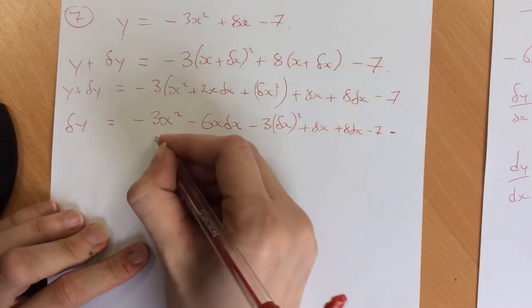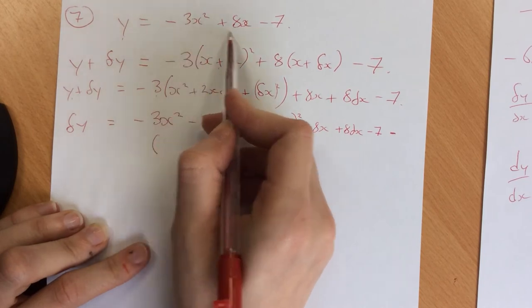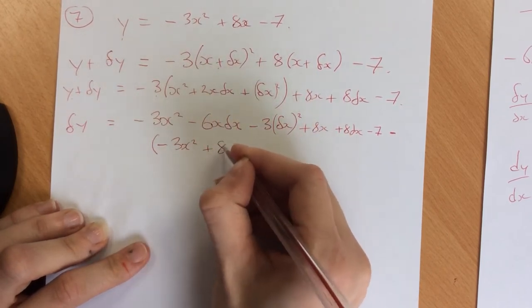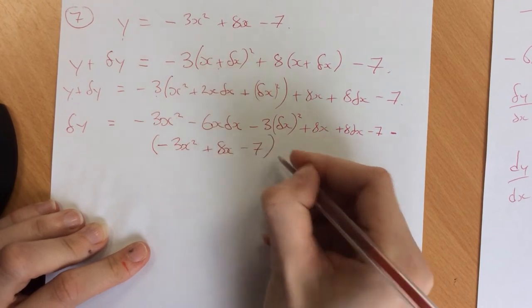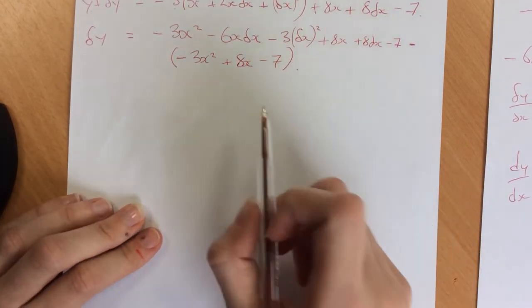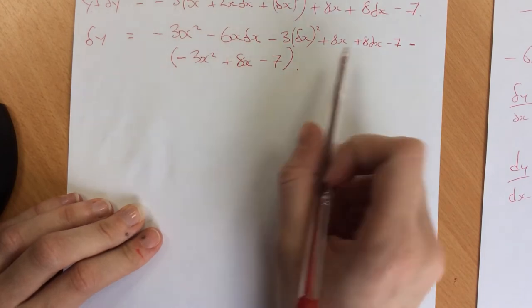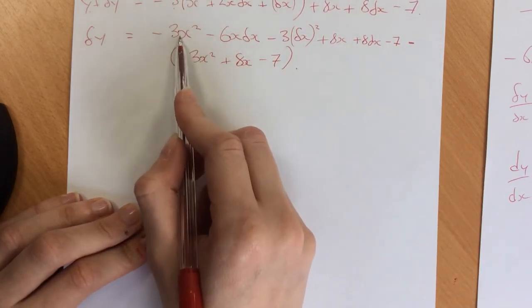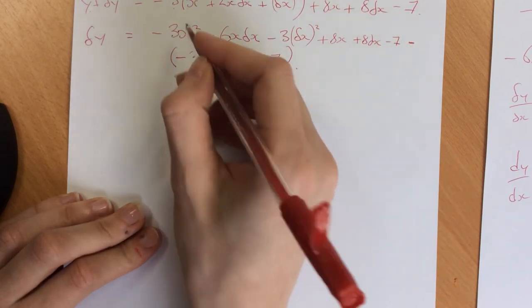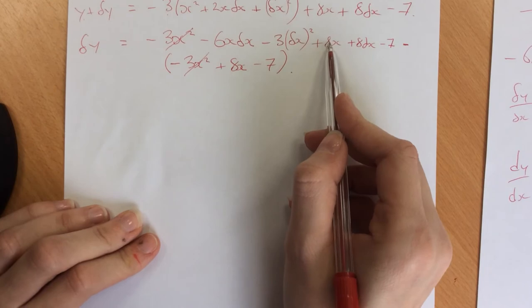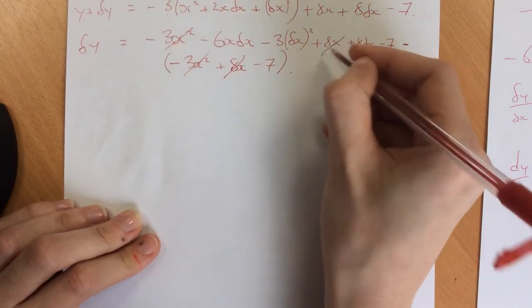So take away all of this: take away (-3x² + 8x - 7). Looking at that, we can now see we can cancel some bits out because this bracket is all minus. I've got -3x² and +3x², so they cancel. I've got +8x and -8x, so they cancel.